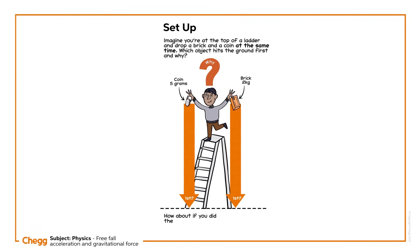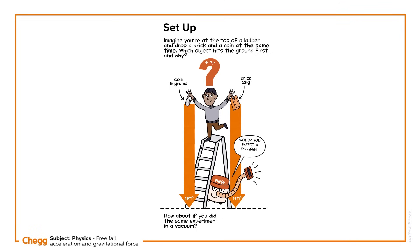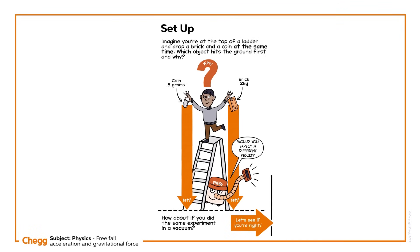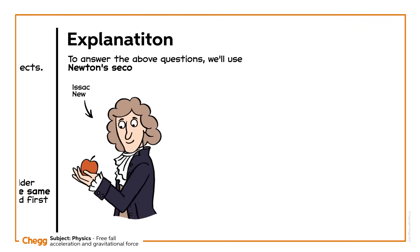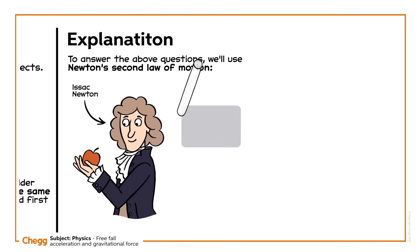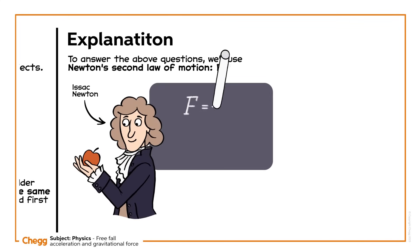How about if you did the same experiment in a vacuum? Would you expect a different result? Maybe the answers seem obvious to you. Let's see if you're right. To answer the above questions, we'll use Newton's second law of motion: F equals m times a.